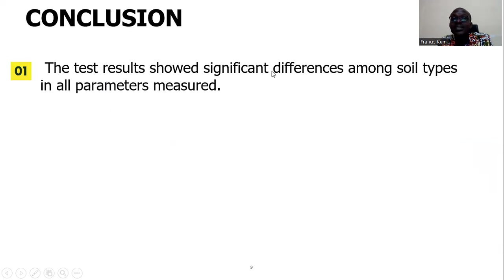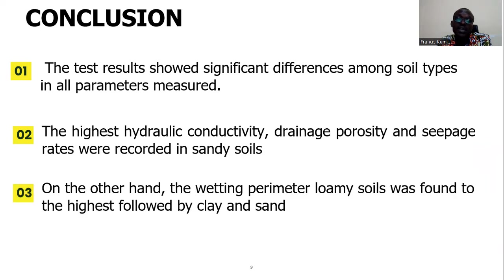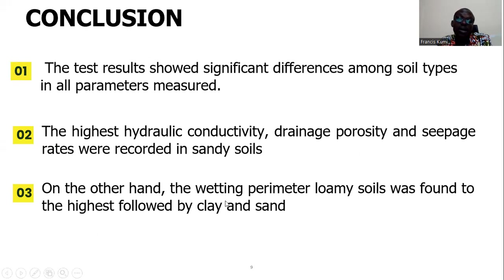In conclusion, there are significant differences among the different soil types with this technology. In terms of hydraulic conductivity, drainage porosity, and seepage reach, the highest values were found in sandy soil. On the other hand, the wetting parameter was better in loamy soil, suggesting that loamy soil is better for allowing water to seep into the root zone. These are our initial results and we will continue to do more tests and share our findings. Thank you very much.